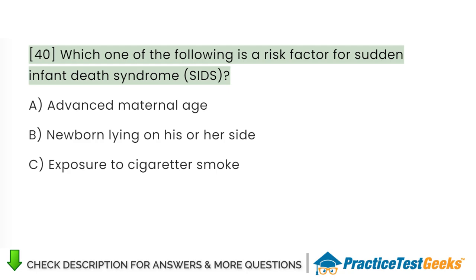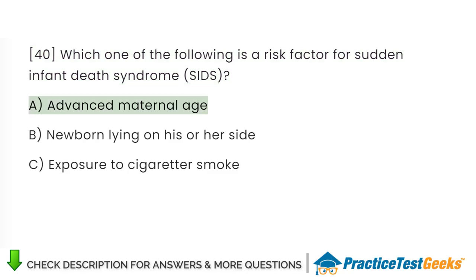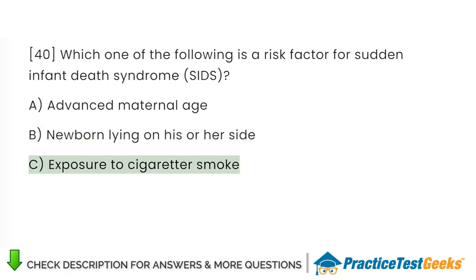Which one of the following is a risk factor for sudden infant death syndrome, SIDS? A. Advanced maternal age. B. Newborn lying on his or her side. C. Exposure to cigarette smoke.